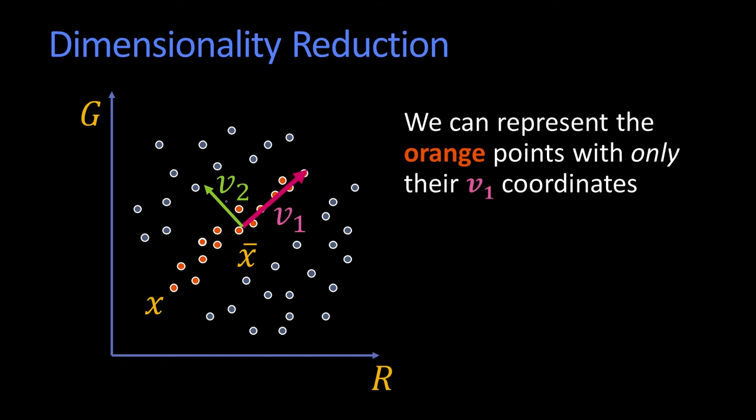And what that would mean is essentially that we're going to think of all the orange points as just being on that line, and all I'm going to tell you is where on the line they are, and we're going to essentially ignore the amount that they're off that line.